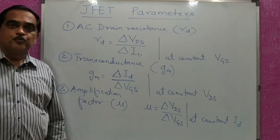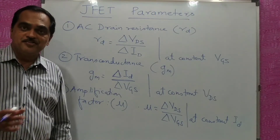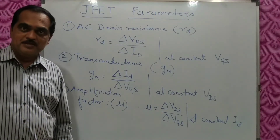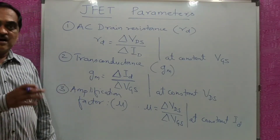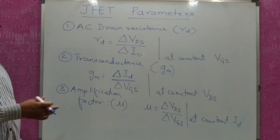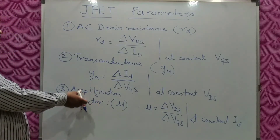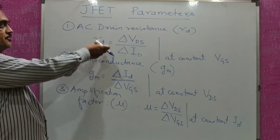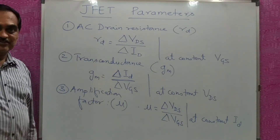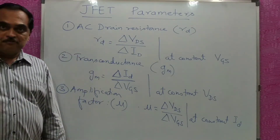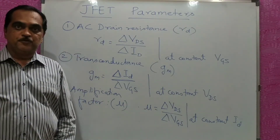Now we can also prove a relationship between these three parameters. That relationship will be: amplification factor is equal to transconductance multiplied by drain resistance. We can prove this.